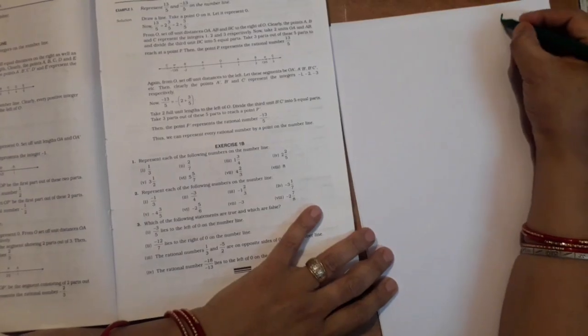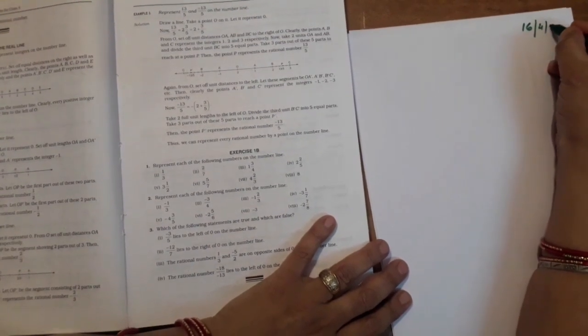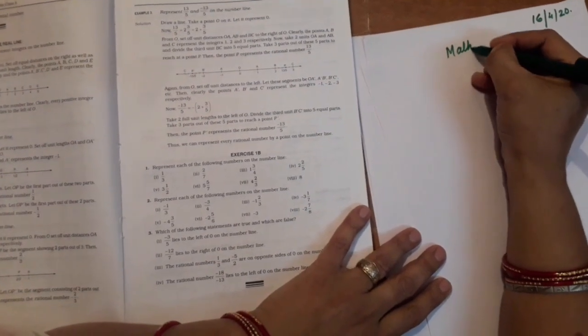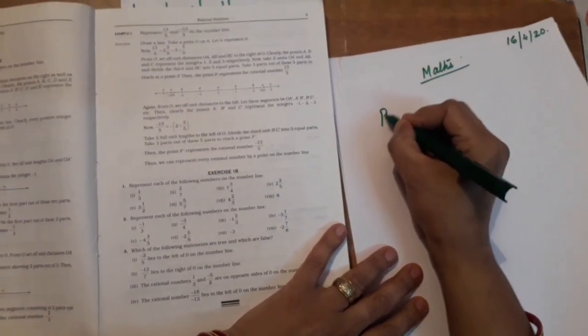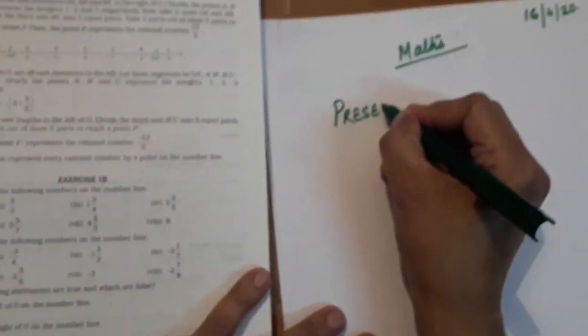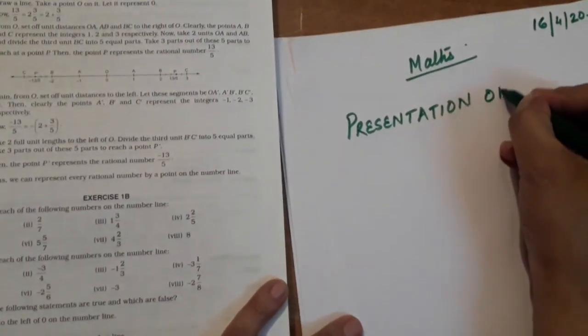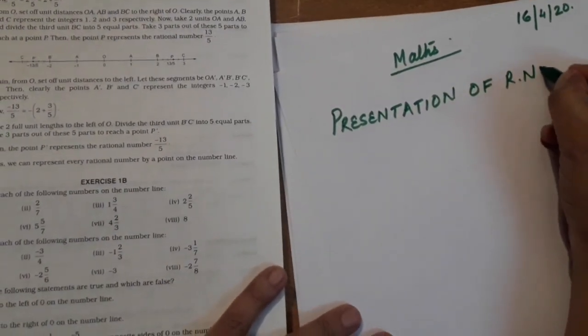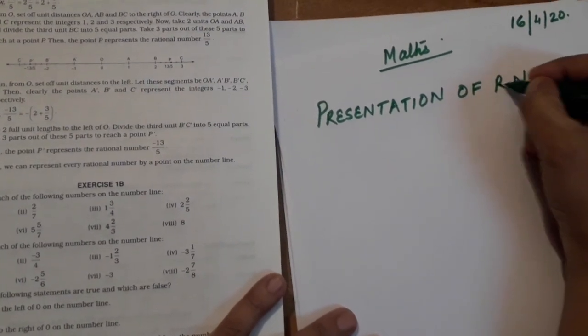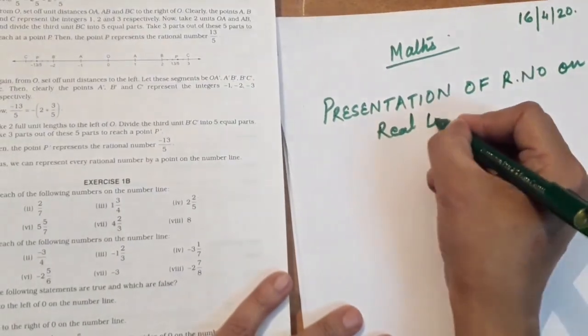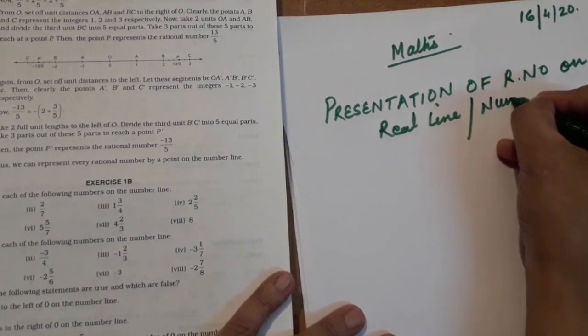But before starting 1B, I have to explain the presentation of rational number on number line. This is the time to write down the date on the top of the page. This is the subject maths. And today's topic is presentation of rational numbers, rational number or real numbers, rational number in fact, on real line, or number line.